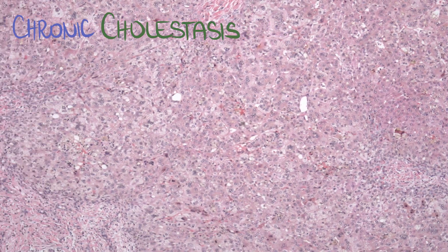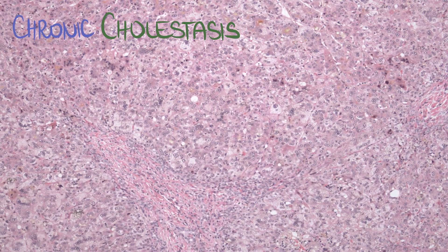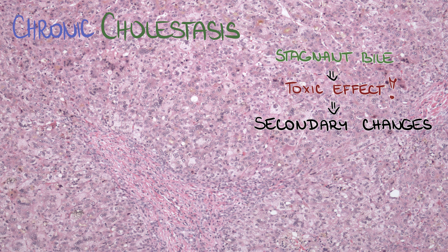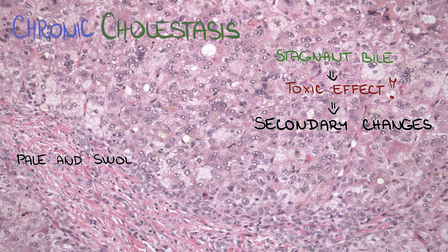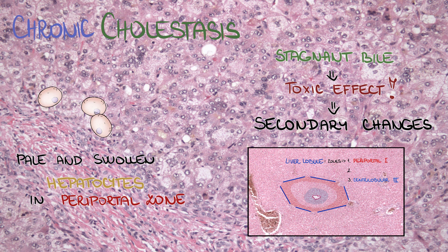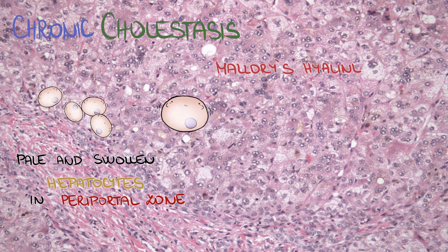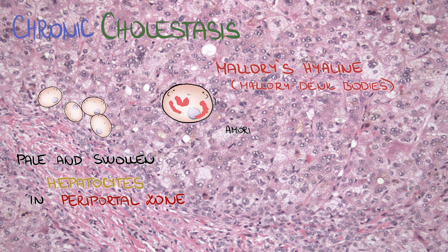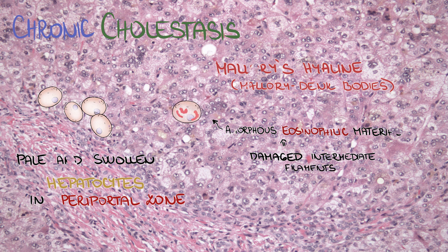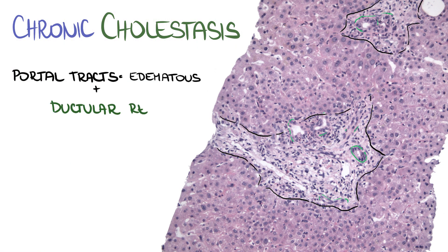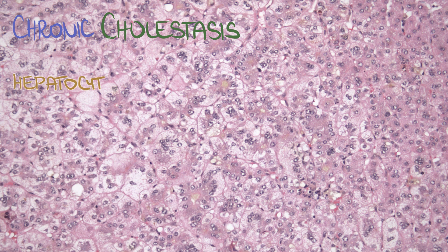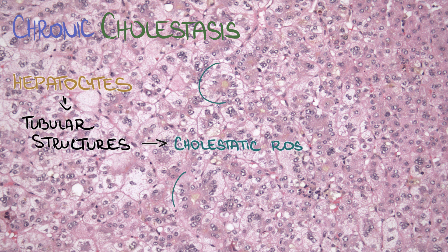In a chronic phase, bile is not always visible in microscopy, and sometimes we only see secondary changes caused by the toxic effect of stagnant bile. Those changes manifest as pale and swollen hepatocytes in the periportal zone, often containing Mallory hyaline or Mallory-Denk bodies. This amorphous eosinophilic material in the cytoplasm of hepatocytes is in fact a clump of damaged intermediate filaments. Portal tracts are edematous and there is usually a ductal reaction. The architecture of the liver lobule is impaired and hepatocytes start to form tubular structures, which are called cholestatic rosettes.